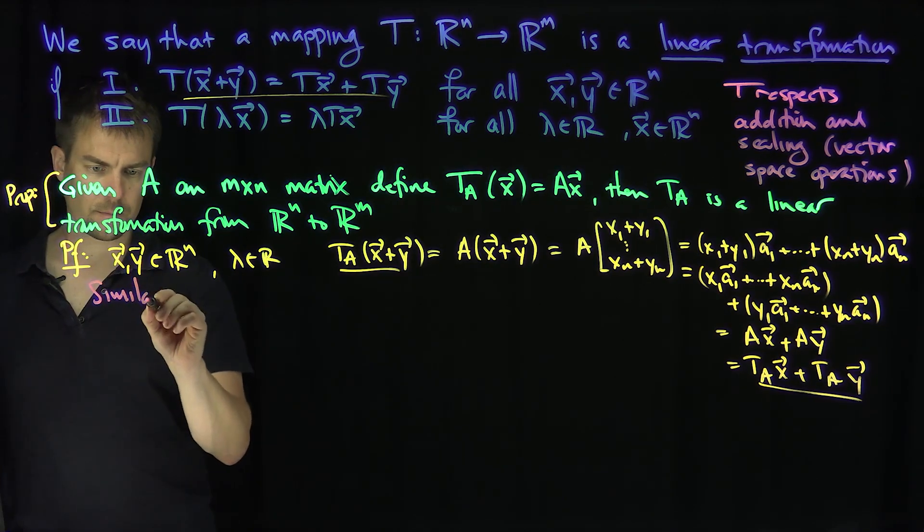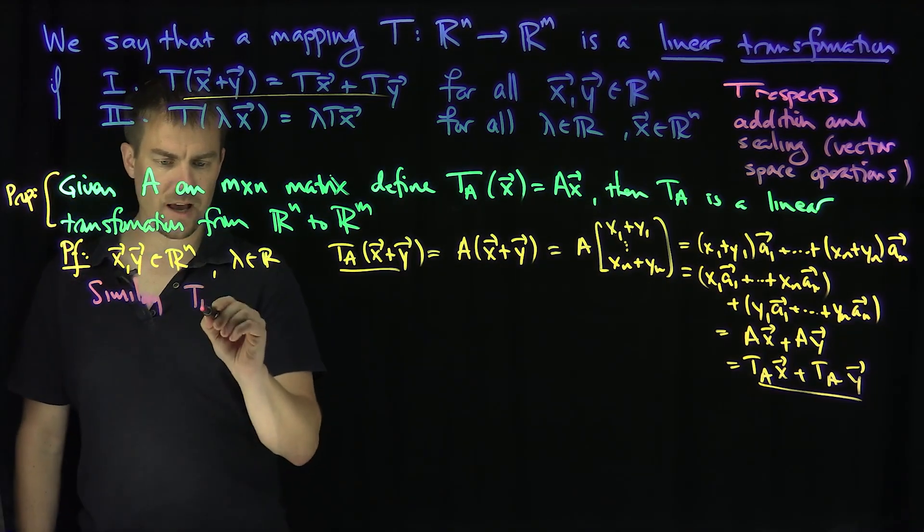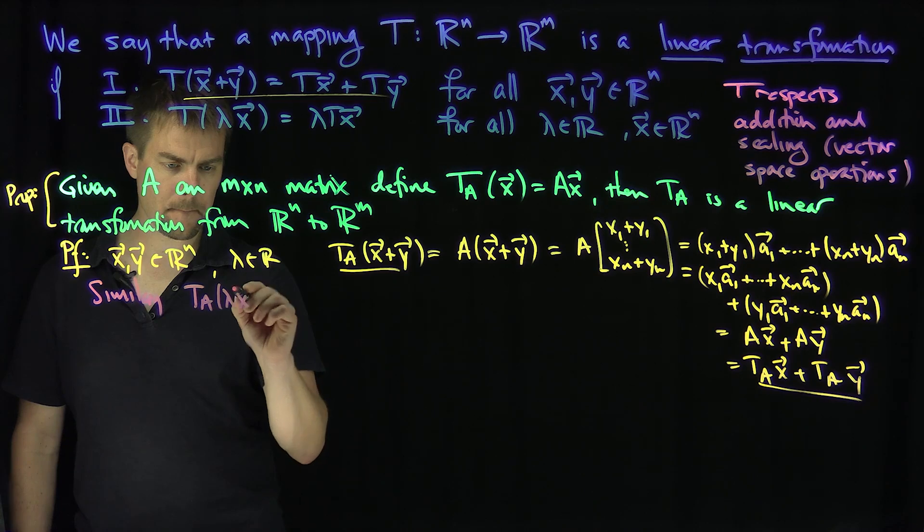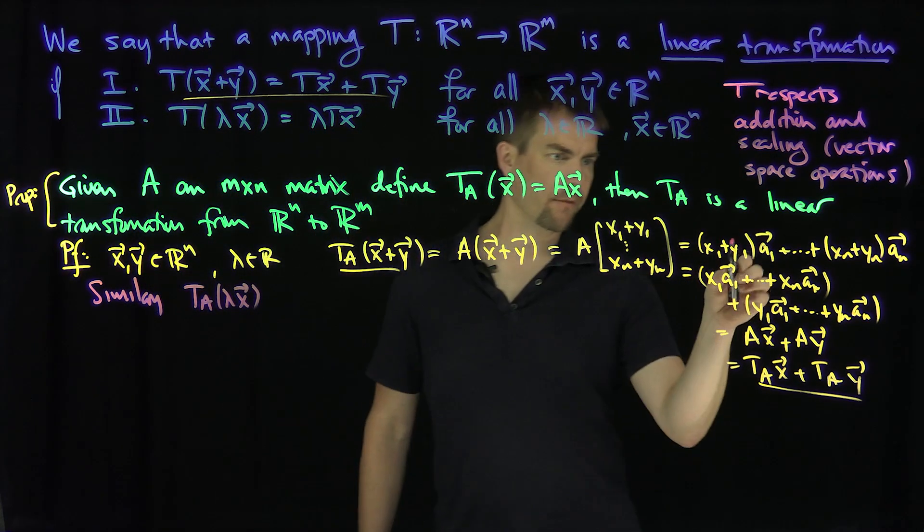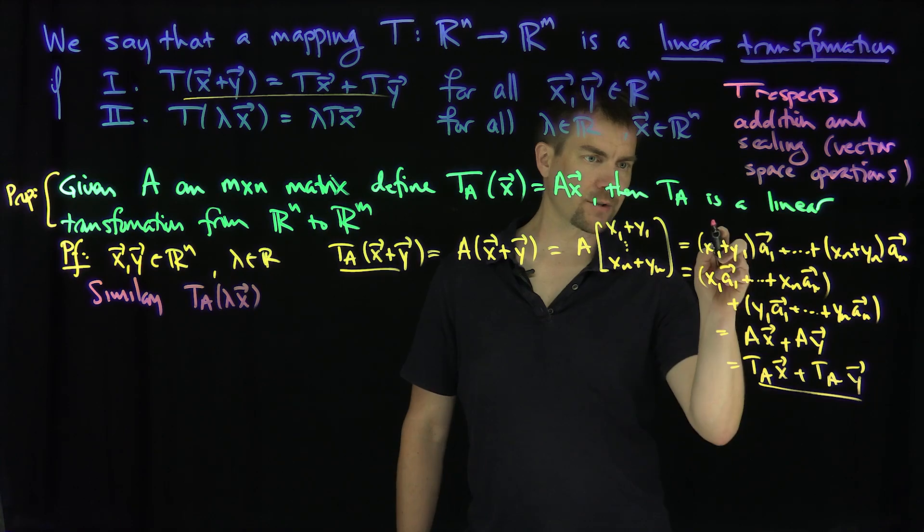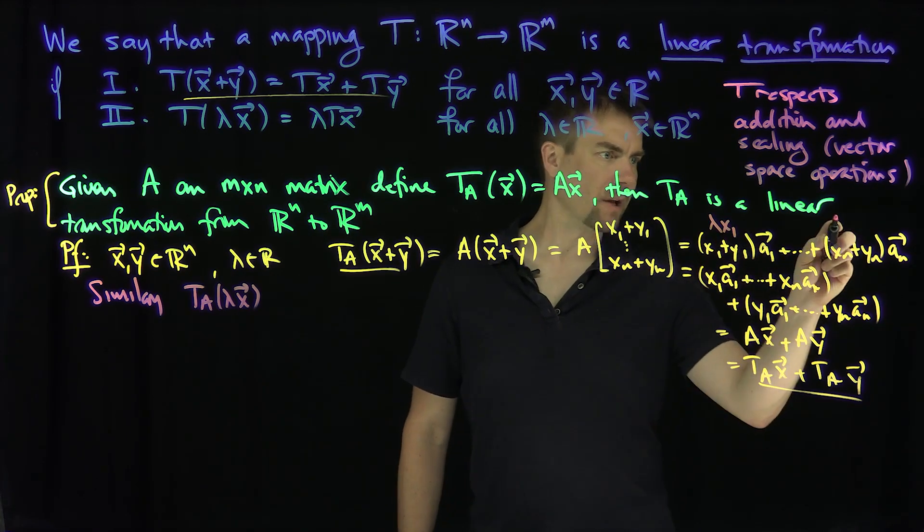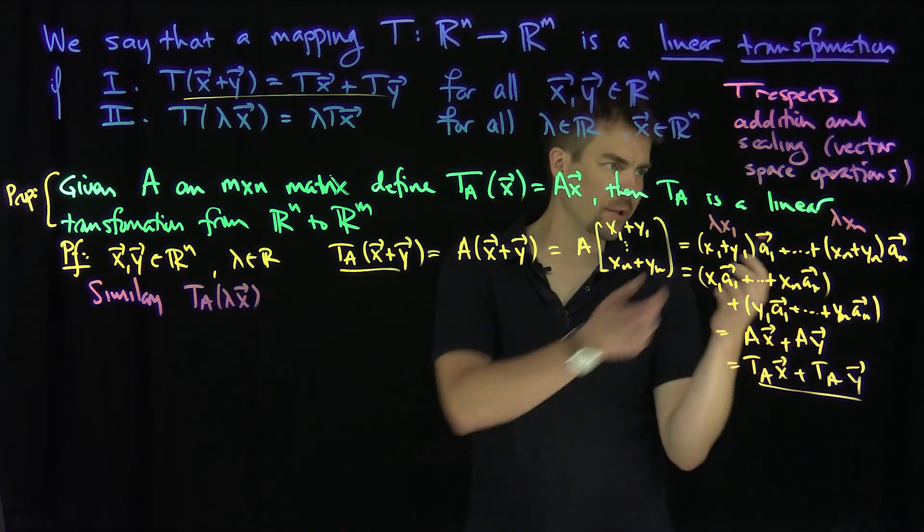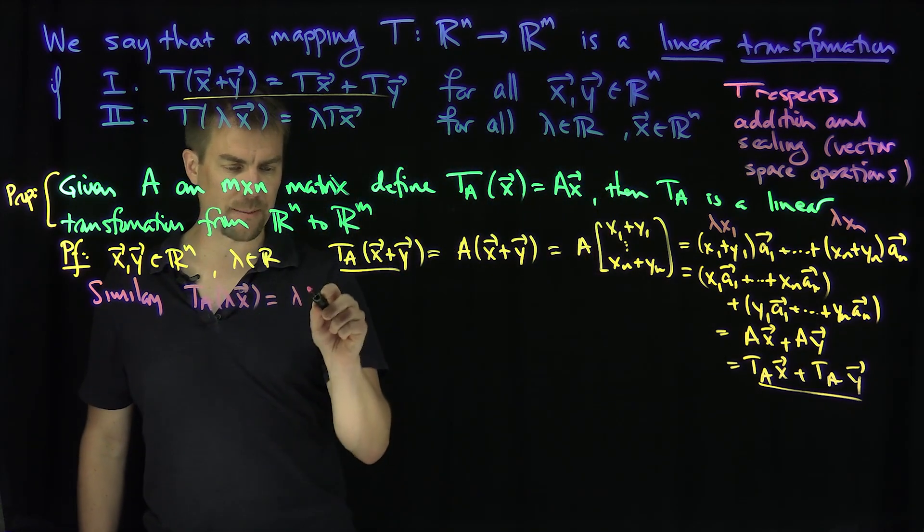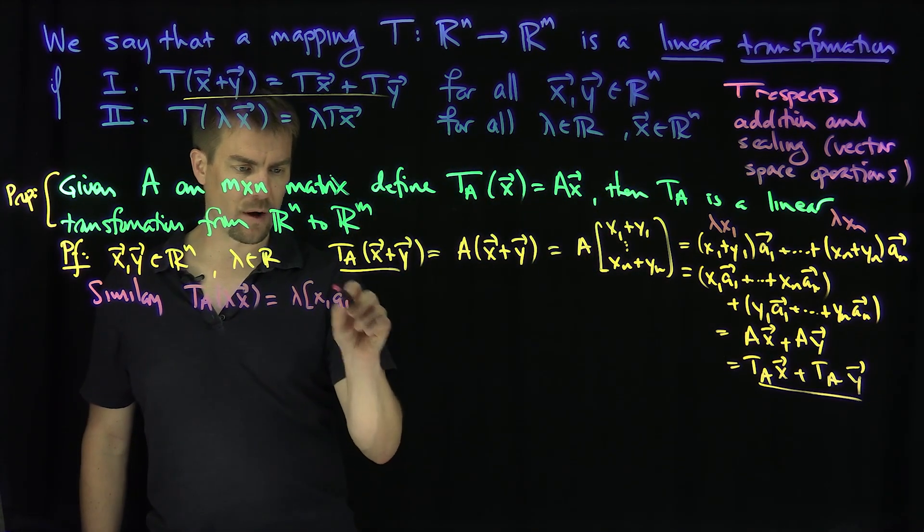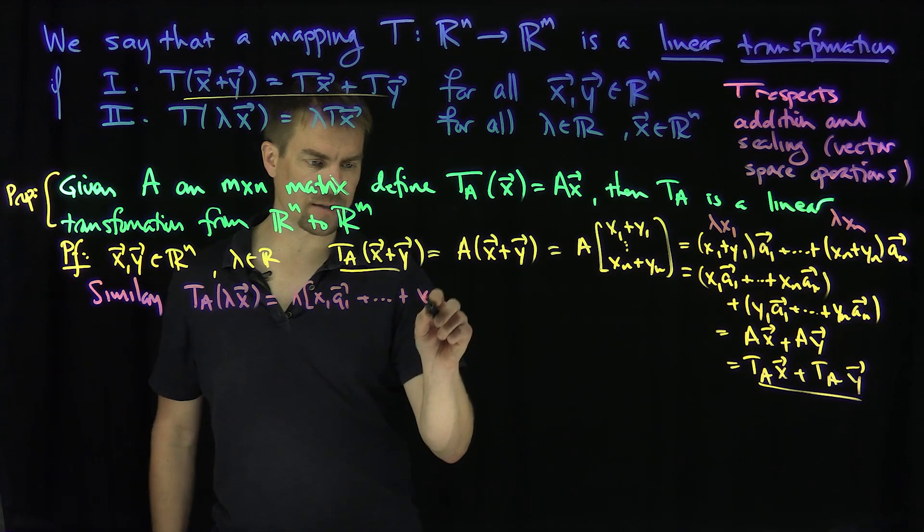What would happen over here? I just have all those lambdas. So in other words, forget about the y's and put a lambda in front of there. So this would be like a lambda x_1, that'd be like a lambda x_n. Well, what I can do is I can pull that. There's a common factor of lambda through all these things. I can pull that lambda out. So it's going to be lambda x_1 A_1 plus all the way down to x_n A_n.